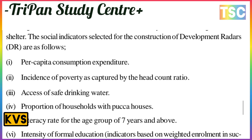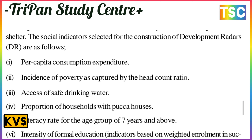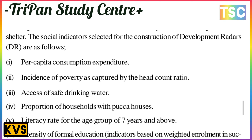The social indicators selected for the construction of the development radar are: first, per capita consumption expenditure; second, incidence of poverty captured as the headcount ratio; third, access to safe drinking water; fourth, proportion of households with pucka houses; and fifth, literacy rate for the age group of seven years and above.